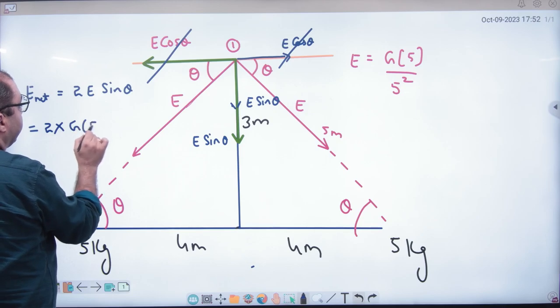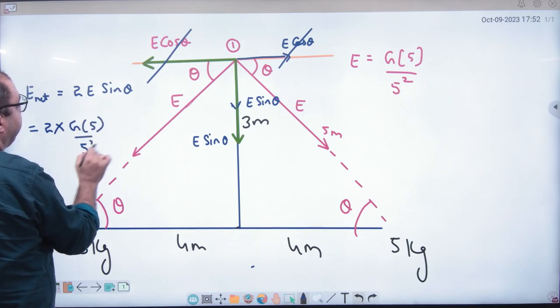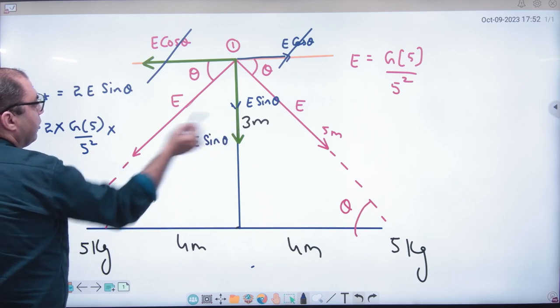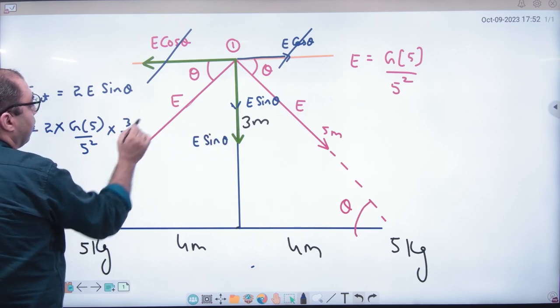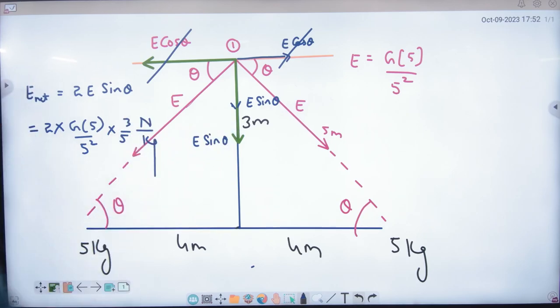G into 5 by 5 square sin theta solve. Newton per kg is the answer. Net E is downward direction.